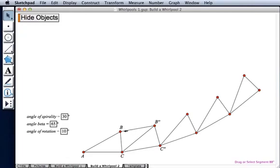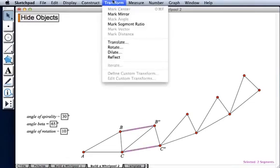Now the amount of dilation I need in order for the second row of triangles to fit onto the first is defined by the ratio of B, B double prime to C, C double prime. So to form that ratio, I'll select and order the two segments, this one first, then the other, and choose transform mark segment ratio.